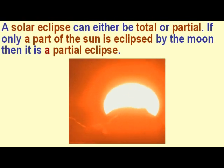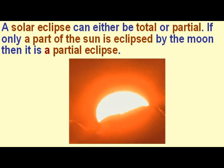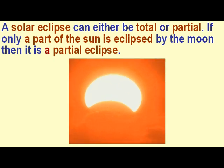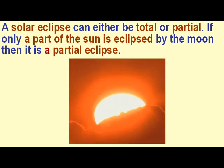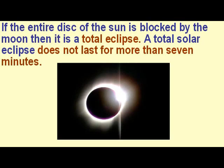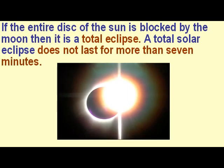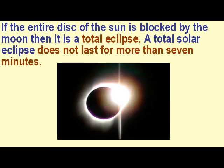A solar eclipse can either be total or partial. If only a part of the sun is eclipsed by the moon, then it is a partial eclipse. If the entire disk of the sun is blocked by the moon, then it is a total eclipse.